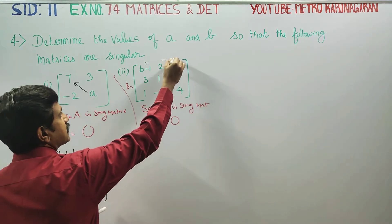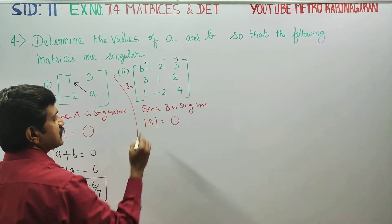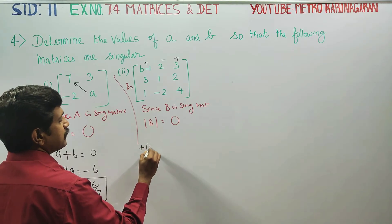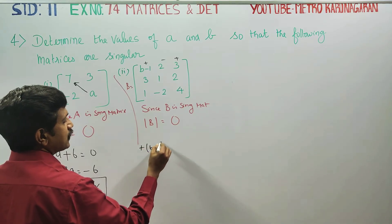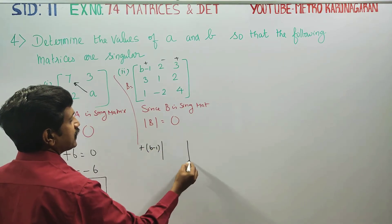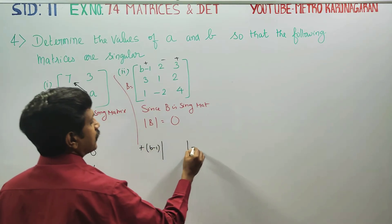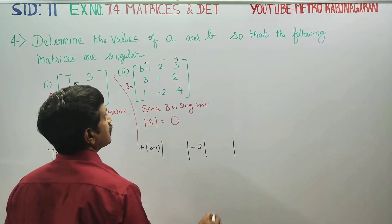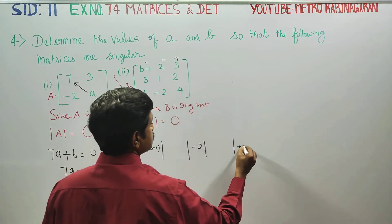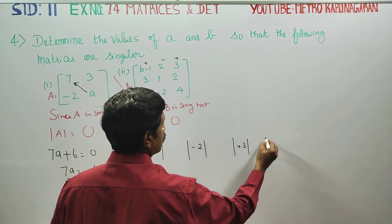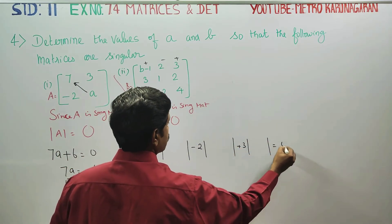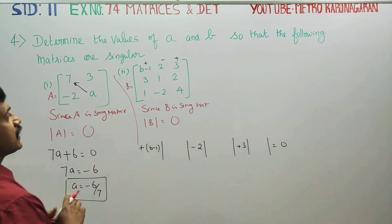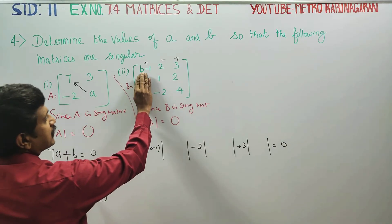Now, for matrix B, using the sign pattern plus, minus, plus — we expand: plus (B minus 1) into its minor, minus 2 into its minor, plus 3 into its minor, all equal to 0. Let us find the minor of (B minus 1).